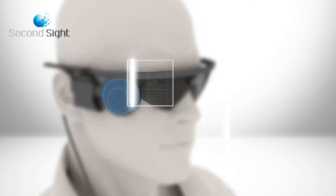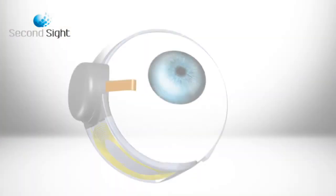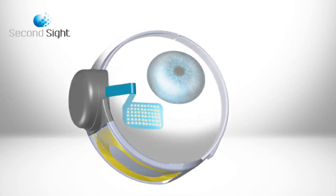These instructions are then transmitted wirelessly to the implant on the eye. The implant consists of a receiver and an array of electrodes.